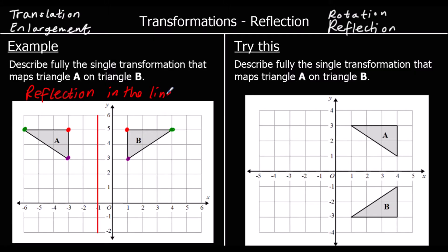The line is called x equals negative one. So: reflection in the line x equals negative one. It's called x equals negative one because for every point on this line, we've got an x coordinate of negative one. So that's the information we need: reflection in the line x equals negative one.